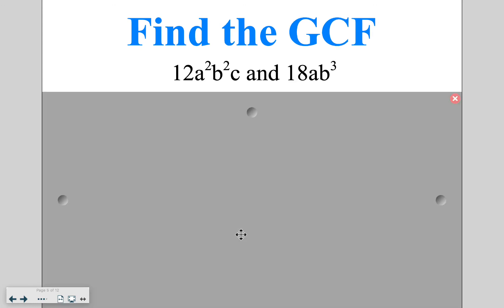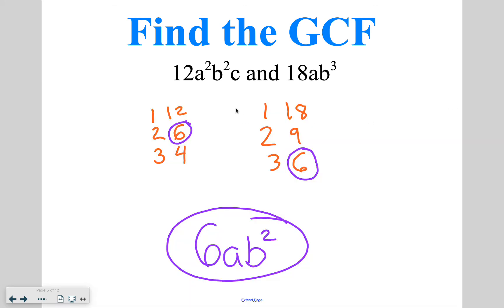Go ahead and find the GCF of these two monomials on your own. Once again, we start by listing those factor pairs. And then we also want to make sure that we are listing those variables out. So 2 a's, 2 b's, and a c.